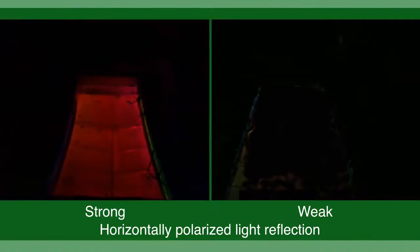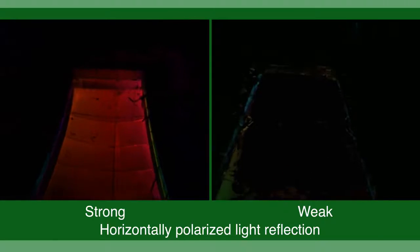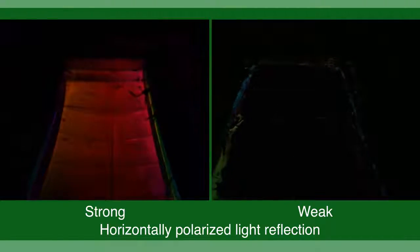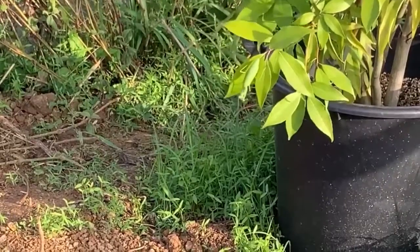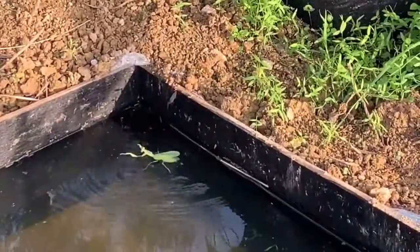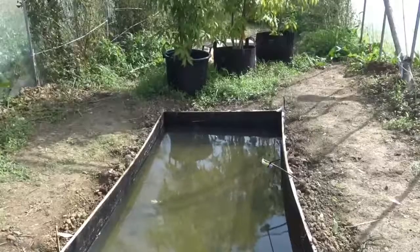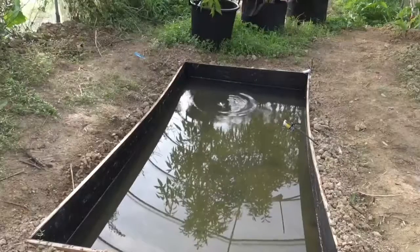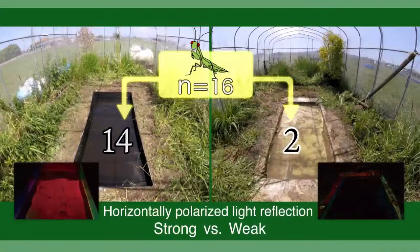To further investigate the association between the enhanced positive polarotaxis and water entry behavior of the infected mantis, we conducted a field experiment. Of these 16 infected mantis, 14 entered a deep pool where the water surface strongly reflected horizontally polarized light with weaker light intensity.